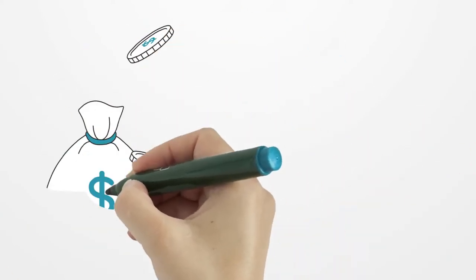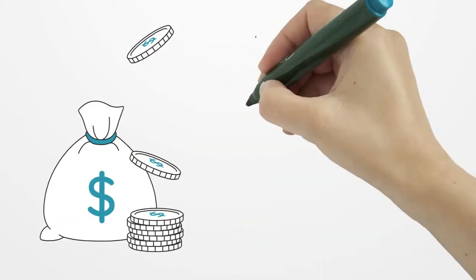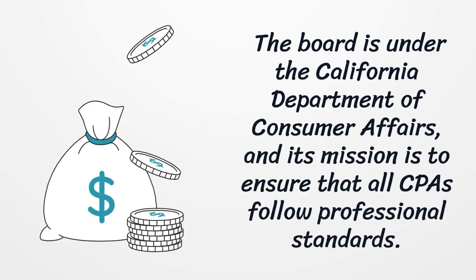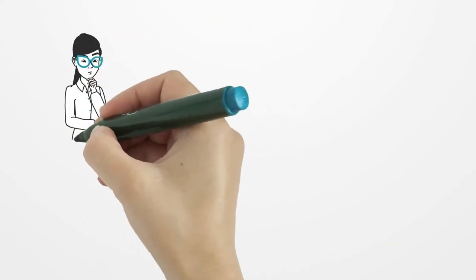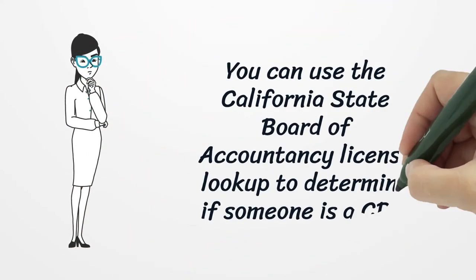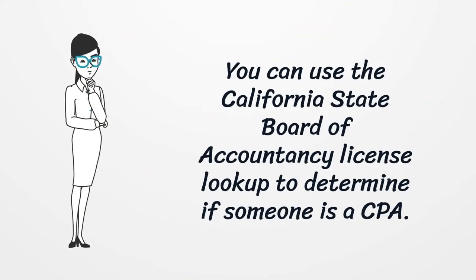The California Board of Accountancy regulates CPAs in the state. The board is under the California Department of Consumer Affairs, and its mission is to ensure that all CPAs follow professional standards. You can use the California State Board of Accountancy license lookup to determine if someone is a CPA.